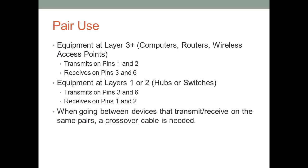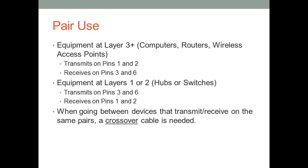If you want to connect a computer directly to a router, both devices transmit on pins 1 and 2 and receive on pins 3 and 6. If either tries to transmit, they'll both raise voltages on the same line and pins 3 and 6 go unused. The solution is a crossover cable, which takes pins 1 and 2 on one side and rewires them to pins 3 and 6 on the other side, allowing two same-type devices to communicate.